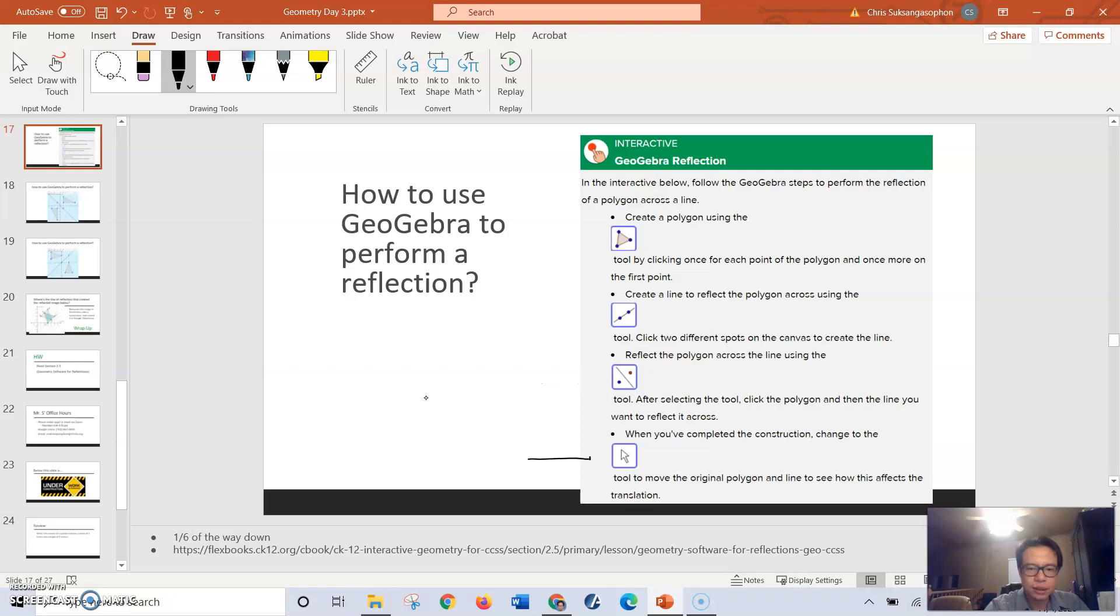After that, you can click on the selection tool to move your line of reflection around or move your polygon around to see what happens.